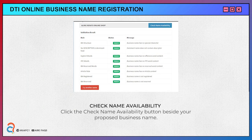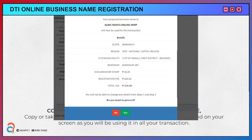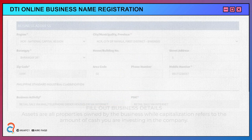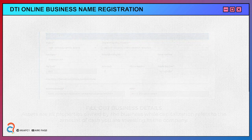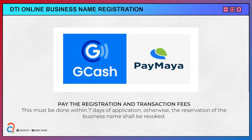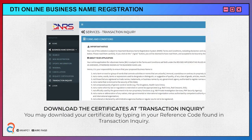Check name availability. A pop-up box will then appear offering two choices on how you want your proposed business name to be arranged. Confirm details to be assigned a reference code. Fill out business details and confirm these details. Pay the registration and transaction fees.